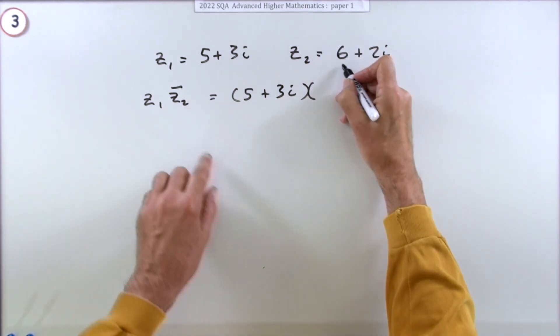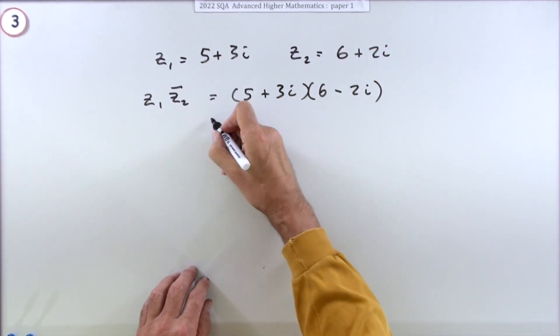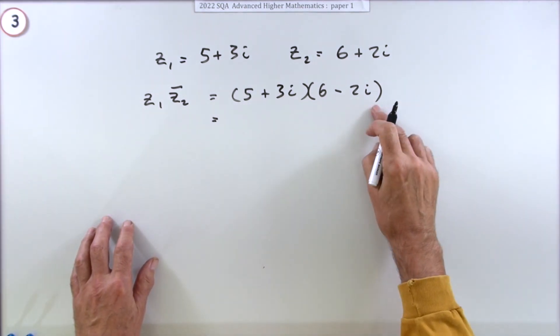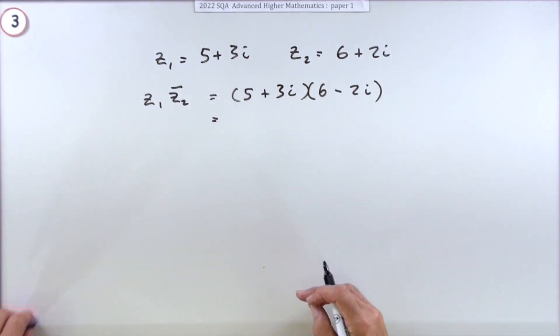But z2 bar will still be 6 but it'll be minus 2i. Now I think that was the first mark, just for realizing that the complex conjugate involved reversing that sign. What could be easier? Now multiply it out.